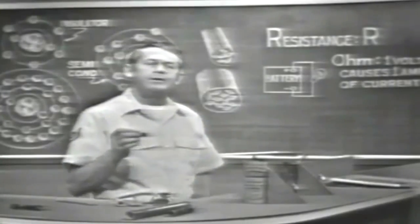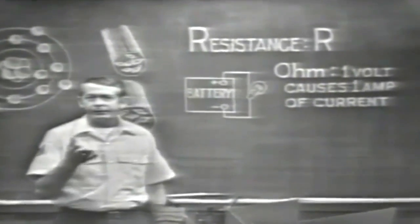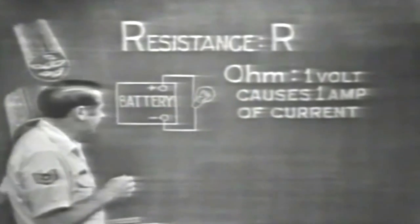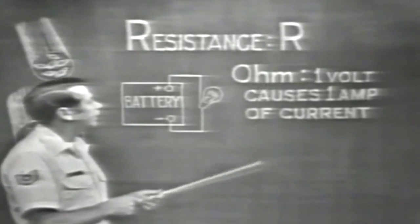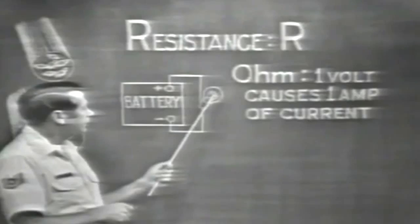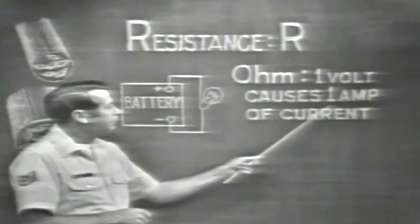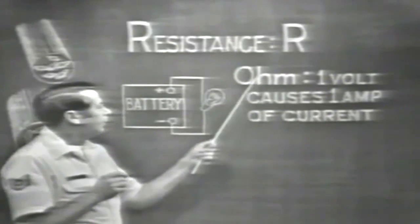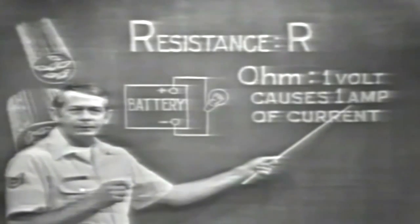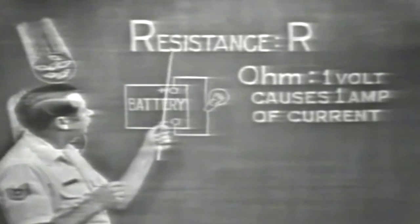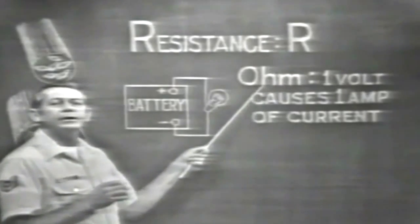Since different circuits require various amounts of resistance, there's a need for measuring resistance. Resistance is measured in units called ohms — O-H-M. One ohm of resistance means that it will limit the current from a one-volt source to one ampere. The symbol for resistance is the capital letter R, and remember it's measured in ohms.